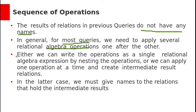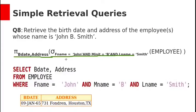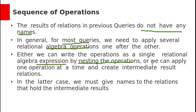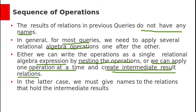In this kind of complex queries, either we can write the operations as a single relational algebra expression by nesting the operations. This entire result is nested inside the projection operation. Or we can apply one operation at a time and create intermediate result relations. In this second case, we must give names to the intermediate results.